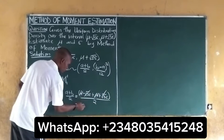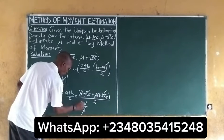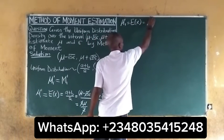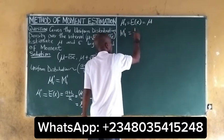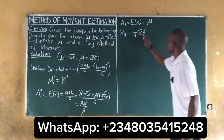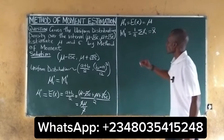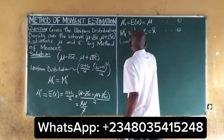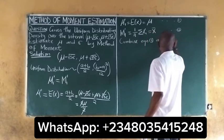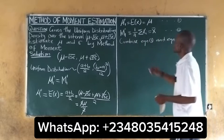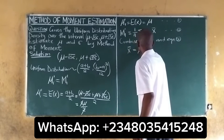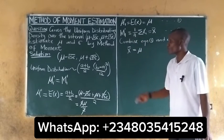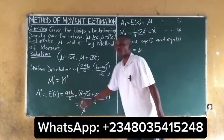The terms will cancel and we are left with 2mu over 2. So the expected value of x equals mu. The sample mean is (1/n) summation of xi, which equals x-bar. Combining equation 1 and equation 2, we get the mean equal to mu — meaning the population mean equals the sample mean.